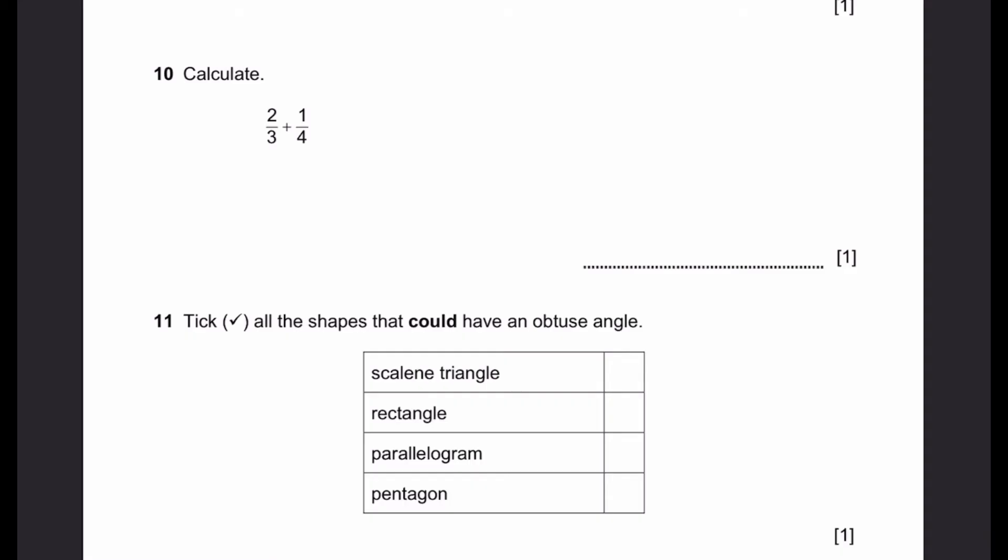Question 10. Calculate 2 by 3 plus 1 by 4. We can write this as 8 by 12 plus 3 by 12, which is 11 by 12, and that'll be our answer. We multiplied this by 4 on both sides, and we multiplied 1 by 4 by 3 on both sides. So we get these two fractions. Adding them up, we get 11 by 12.